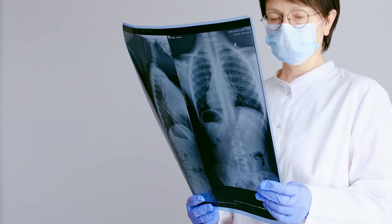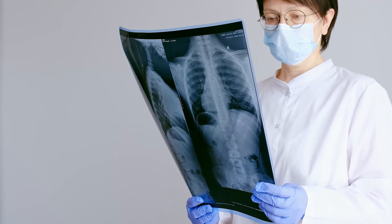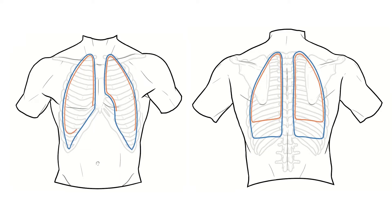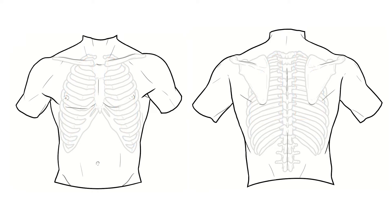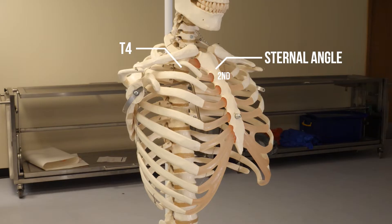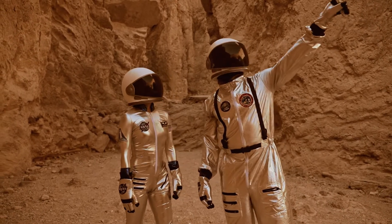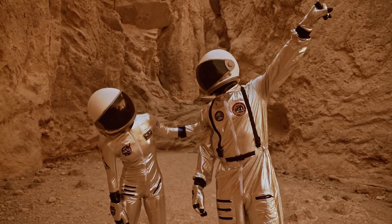If I asked you right now where are your lungs, you'd hopefully point somewhere around here, and you'd be right. But unfortunately the demands of healthcare require you to be a bit more precise than that, so in this video we're going to look at how we can accurately locate the lungs in a living patient. To do this we'll be drawing out the lungs using this illustration, which you can download in the links below. We'll also be counting ribs and intercostal spaces using the sternal angle. If you're not sure how to do that, I'd recommend checking out this video on the bony landmarks of the chest.